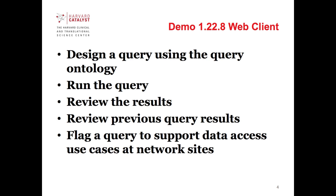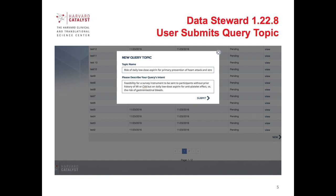Just like I2B2, the terminology is accessible through this pane to create your query. It has all the flexibility that I2B2 does to create complex queries, time constraints, and so on. Unlike I2B2, SHRINE has the concept of approved query topics. One of the common rules within a SHRINE network is that users need to get prior approval for their research project within the network. We're going to pick a query topic that allows us to run the query.